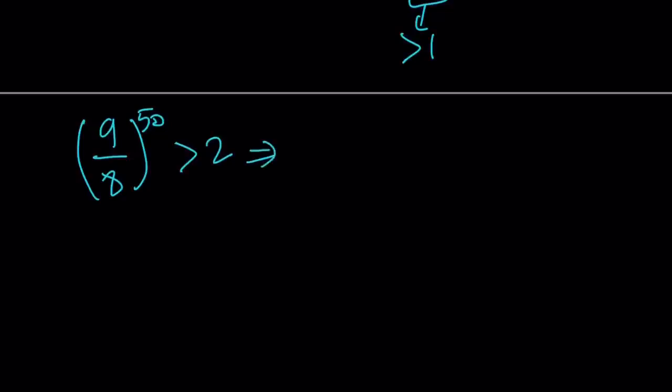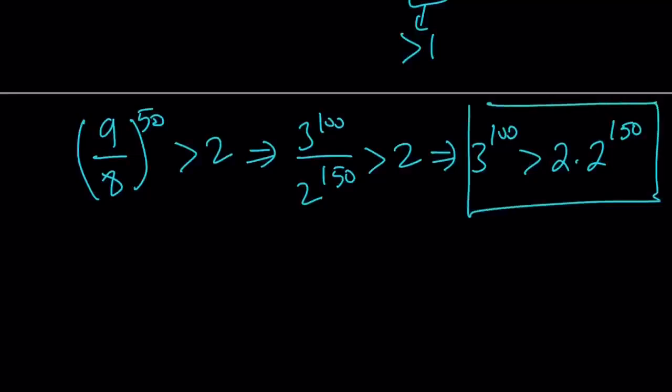I'm going to replace 9 over 8 to the 50 with 3 to the power 100 divided by 2 to the power 150. Remember, that's where it comes from. It's greater than 2. Then cross-multiply, but do not combine the powers. You'll see in a little bit why we're not combining the powers. I know it's tempting. You want to write 2 to the power 151, but don't do it. This is a super-duper important fact. Let's go ahead and use it in our problem.